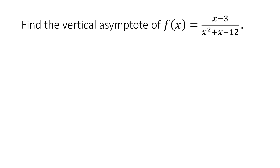For a second example, find the vertical asymptote of f(x) = (x − 3) / (x² + x − 12). First, we have to reduce the given into lowest terms — we have to simplify it first.